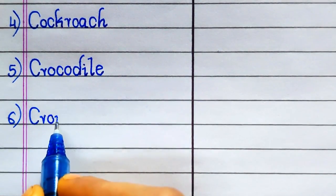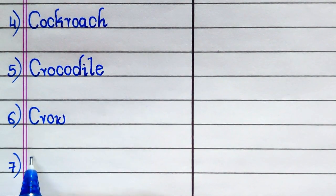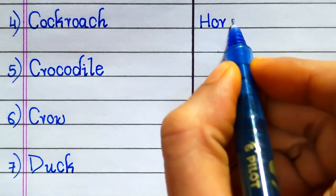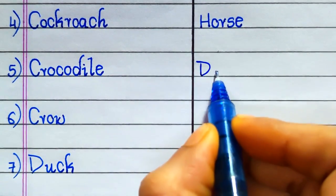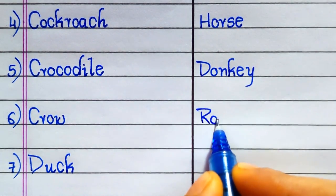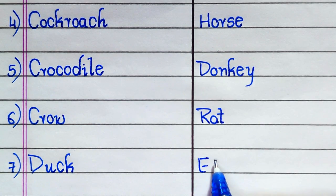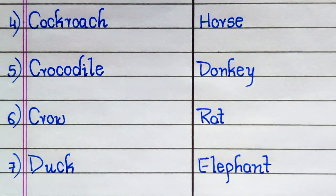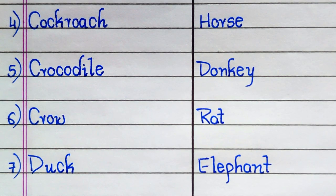The name of the 4th oviparous animal is Cockroach, 5th Crocodile, 6th Crow, 7th Duck. The name of the 4th viviparous animal is Horse, 5th Donkey, 6th Rat, 7th Elephant.